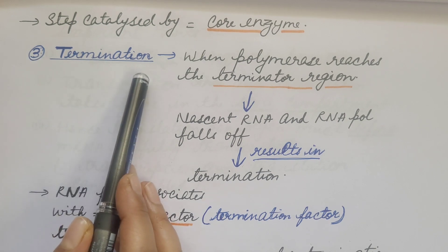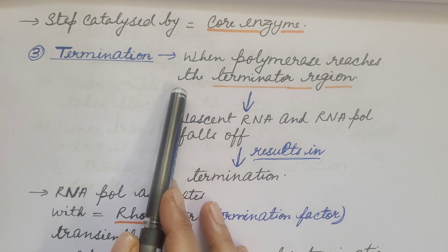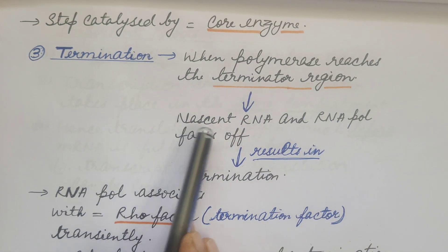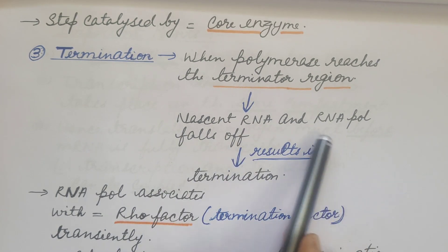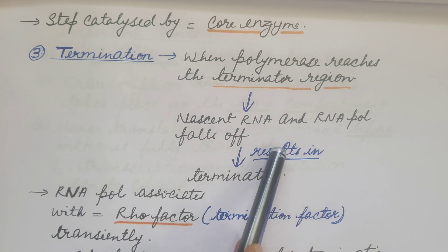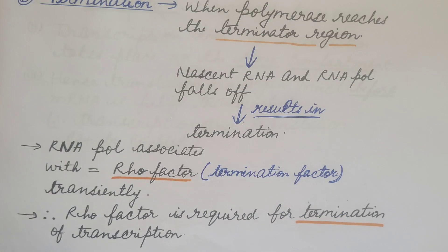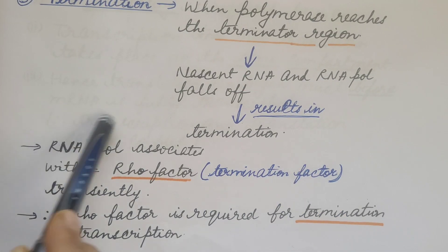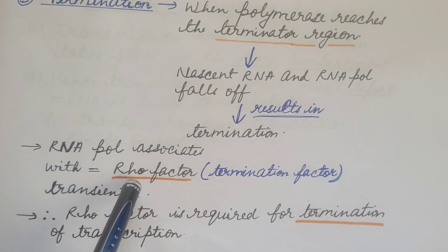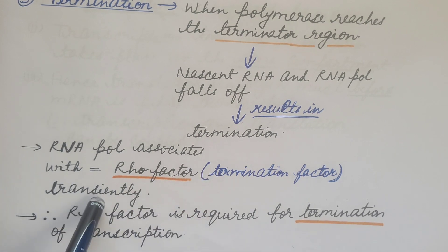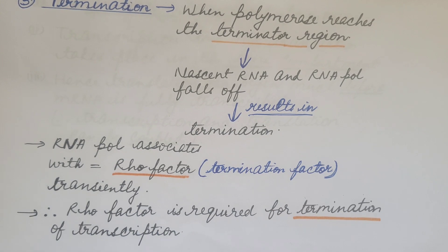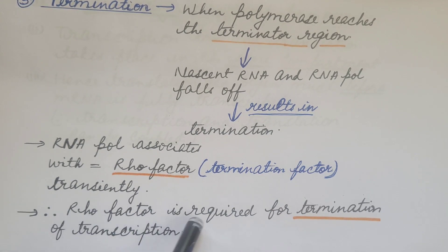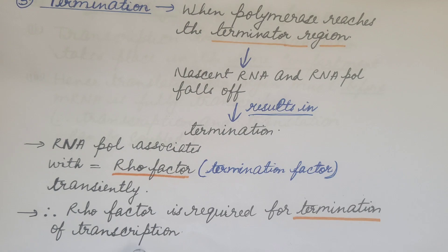Third is termination. When the polymerase reaches the terminator region, the nascent RNA and RNA polymerase fall off. This results in termination — the end of transcription. In this process, RNA polymerase associates with the rho factor transiently. This rho factor is known as the termination factor; therefore, rho factor is required for the termination of transcription.